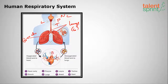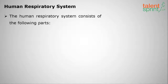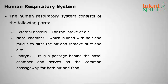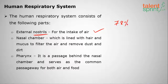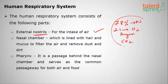We shall now discuss the human respiratory system in detail. The first part is the external nostrils — the two visible holes outside — which are used for the intake of air. Air consists of approximately 78% nitrogen, 21% oxygen, and the remainder is argon, CO2, and other gases.